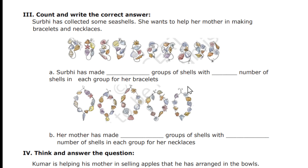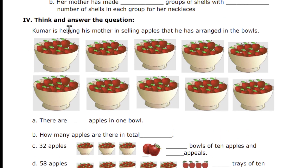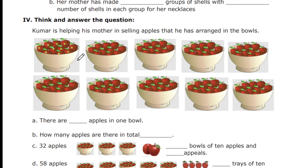Next is a different question — think and answer. Kumar is helping his mother sell apples arranged in bowls. Count the bowls: 1, 2, 3, 4, 5, 6, 7, 8, 9, 10 — totally ten bowls. In each bowl, count the apples: 1, 2, 3, 4, 5, 6, 7, 8, 9, 10 — so each bowl has 10 apples. This is a very important question; the same pattern will appear in your examination. The questions ask: how many apples are in one bowl, and how many apples are there in total across all ten bowls?